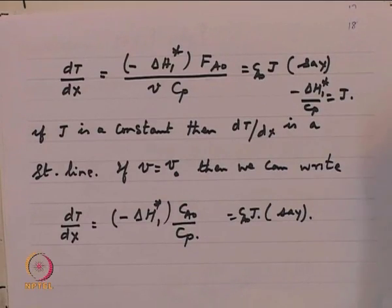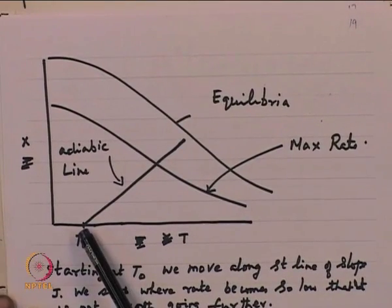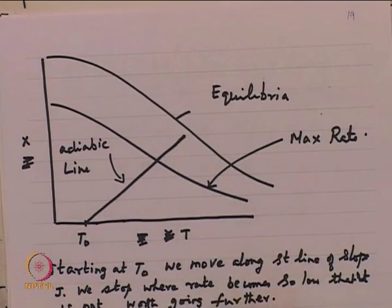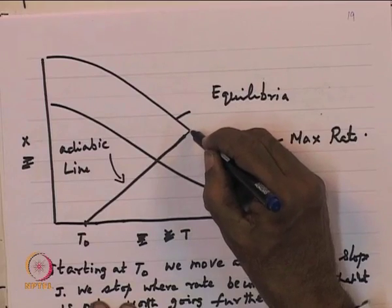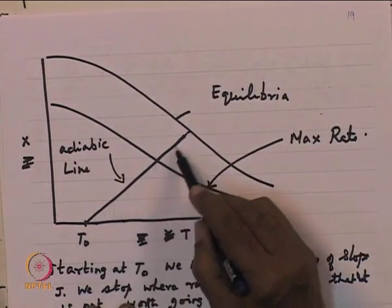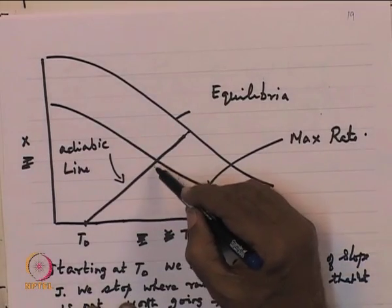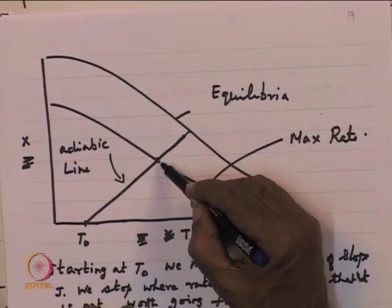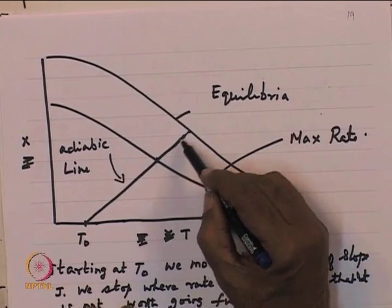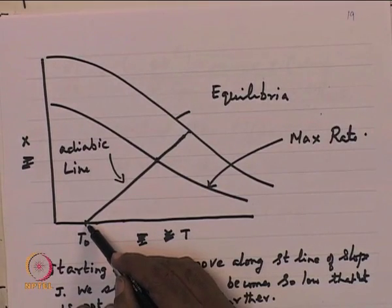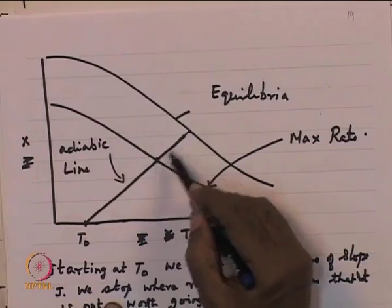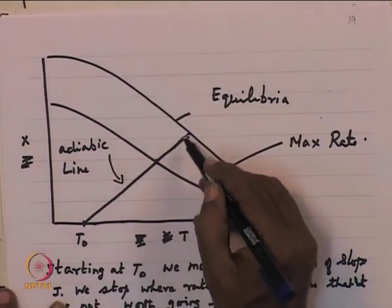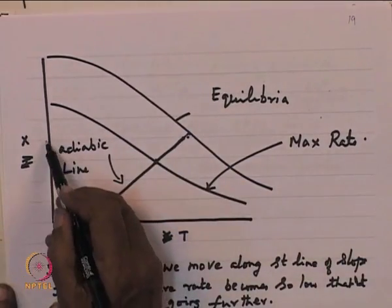A constant dT/dx means if you make a plot of T versus x, it will be a straight line starting at T₀. This straight line can go up to the equilibrium curve. As you move along this curve, temperature is increasing and conversion is increasing. At the point where it crosses the maximum reaction rate curve, the reaction rate has reached a maximum. As you move from that point towards the equilibrium curve, the reaction rates are decreasing.